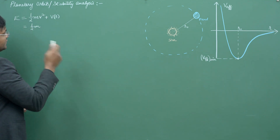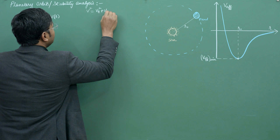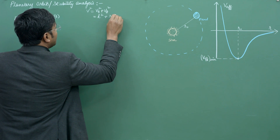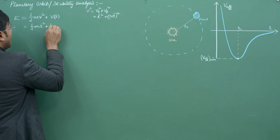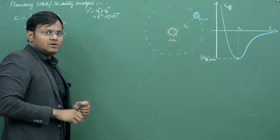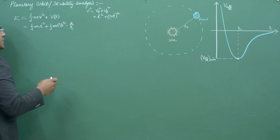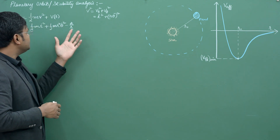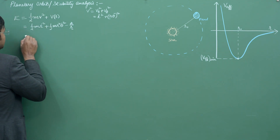Because of conservation of angular momentum, the motion is restricted to a plane. In polar coordinates, the velocity is expressed as v² = v_r² + v_θ², where v_r = ṙ (radial velocity) and v_θ = rθ̇ (transverse velocity). The kinetic energy term becomes ½mṙ² + ½mr²θ̇², and the gravitational potential energy is written as −k/r, where k is a constant, since the gravitational force is an inverse-square force.